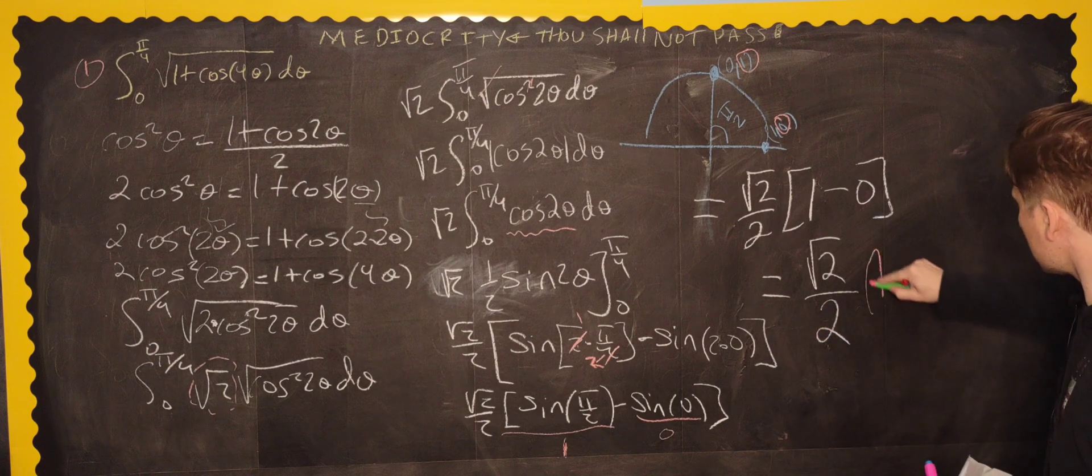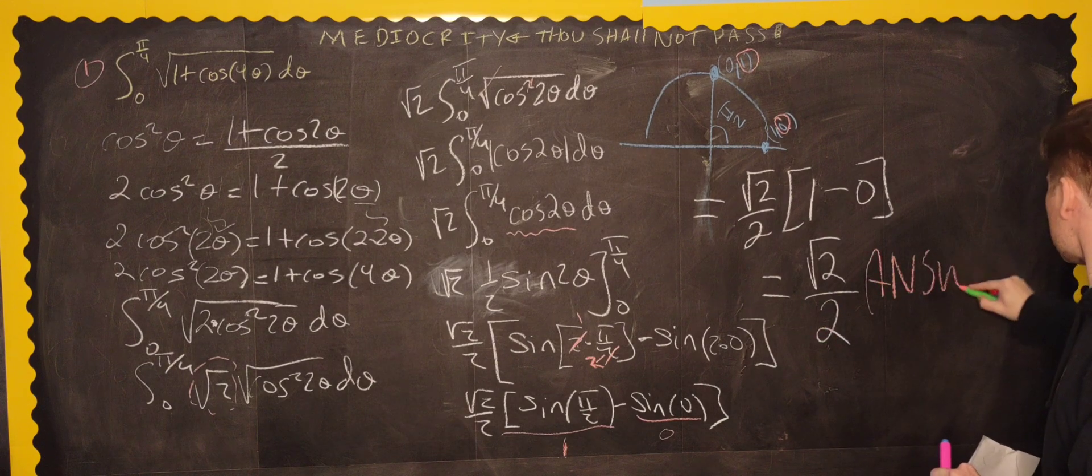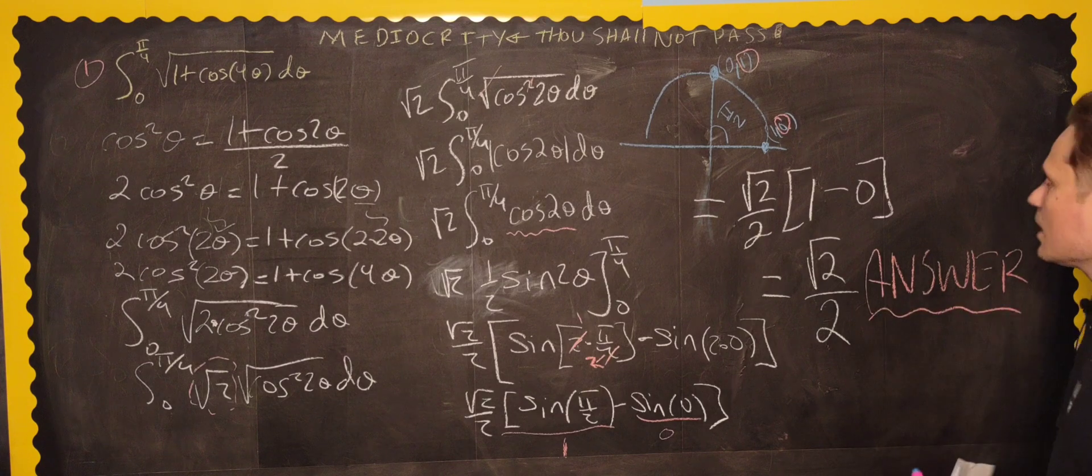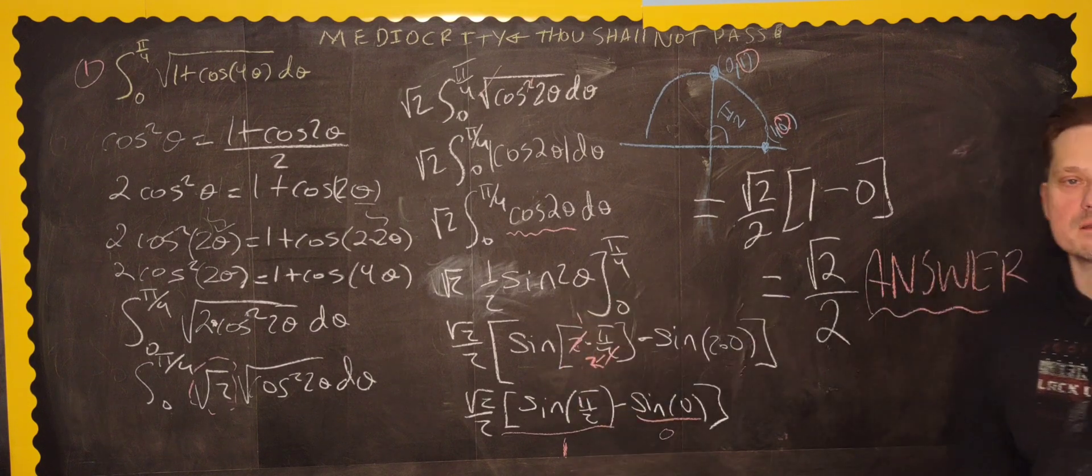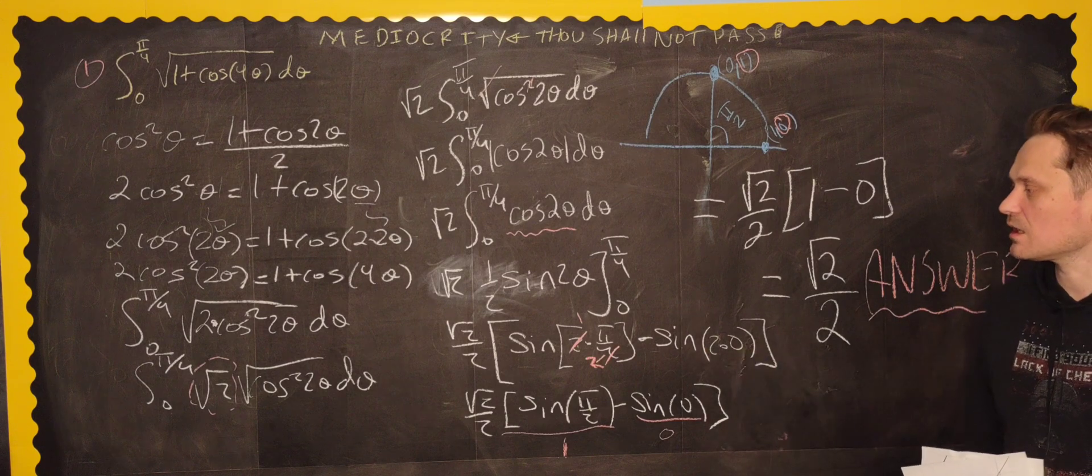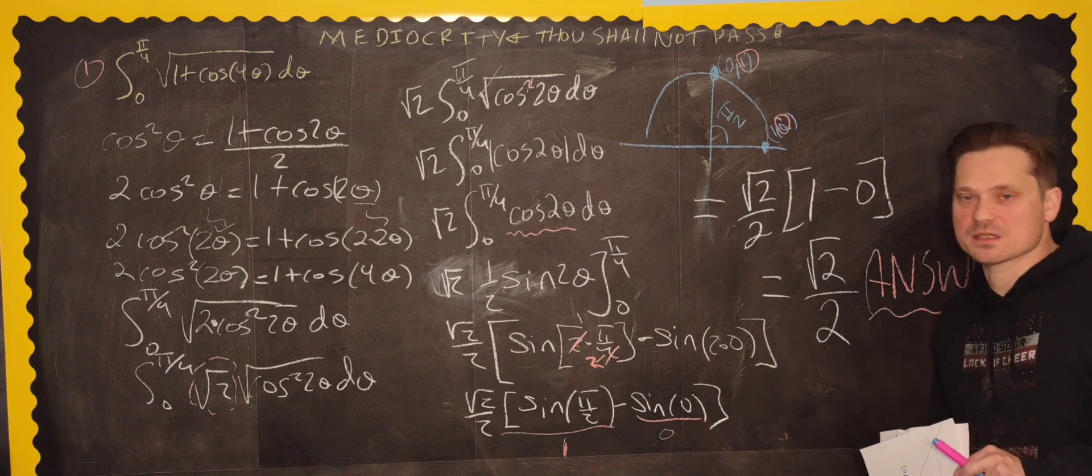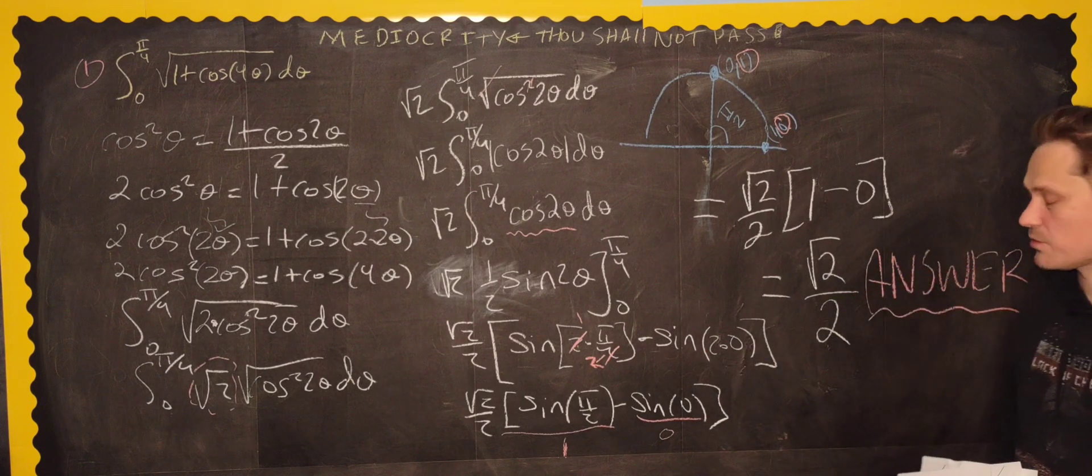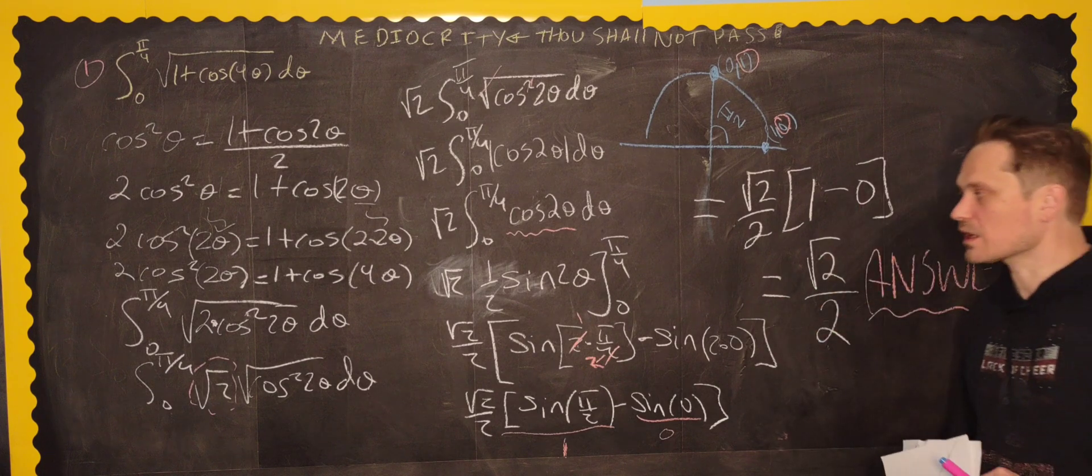And this, friends, is our answer. I'm going to write this big so you don't miss it. Well, the answer actually is the entire process, right? The process itself is what counts. I'm much more interested in that than whether this comes out to be the root of 2 over 2.